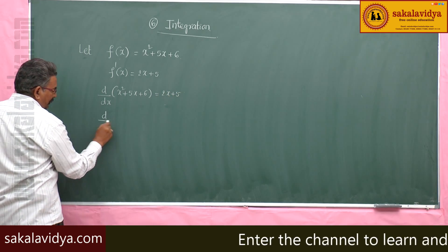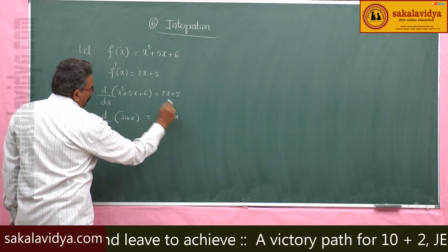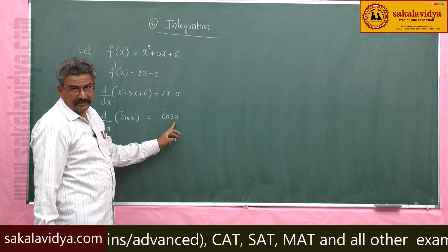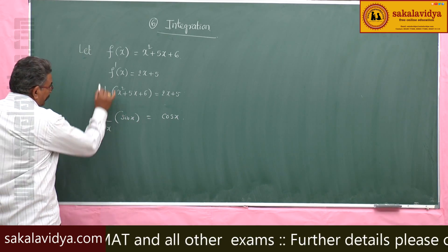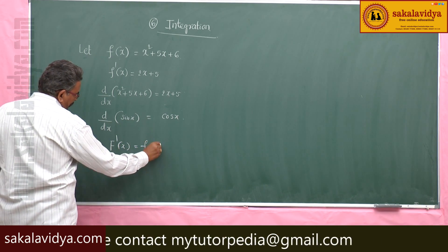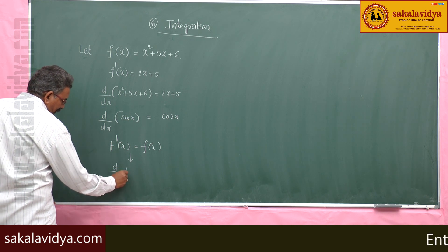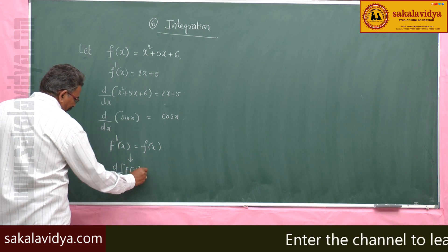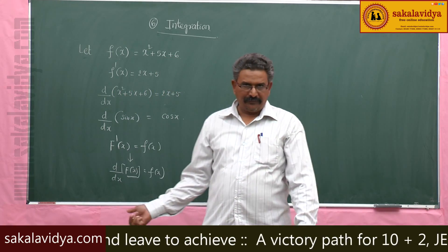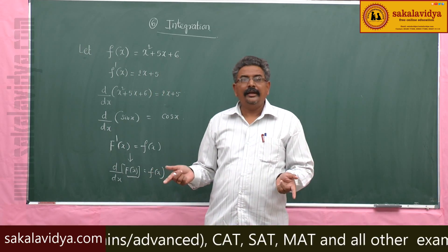Similarly, d by dx of sin x equals cos x. That means if you differentiate this function we get 2x plus 5; if you differentiate sin x we get cos x. Now suppose f dash x equals f of x — that means the derivative of F of x is f of x, or d by dx of F of x equals f of x. Then what do we call F of x? This F of x is known as the primitive of f, or we can call it the anti-derivative.